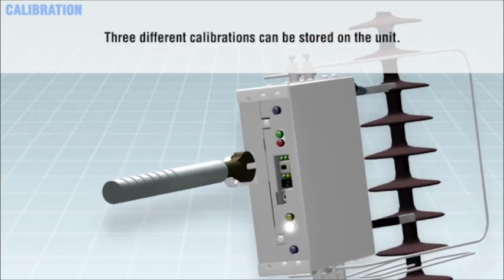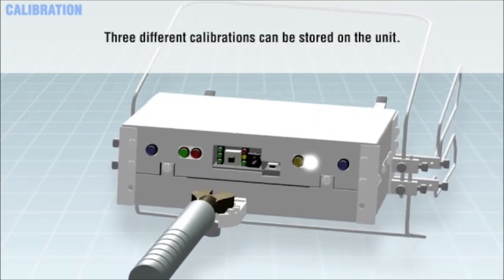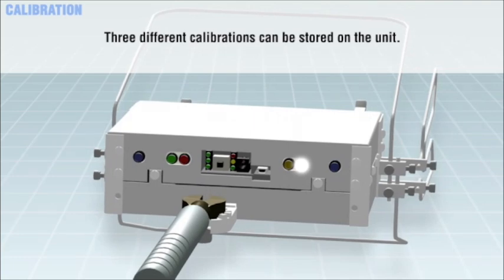Three different calibrations can be stored on the unit. The current calibration in use is indicated by the number of green calibration lights that are illuminated on the unit. Calibrations can also be selected through a Wi-Fi enabled device. Refer to the user manual for more information about these features.